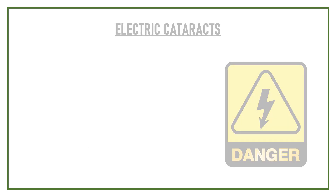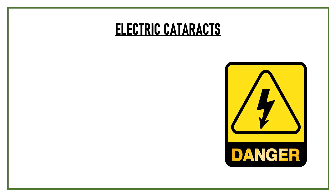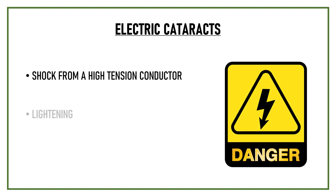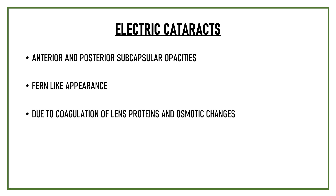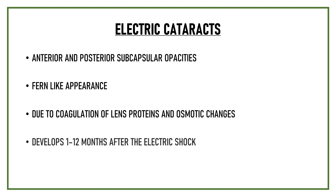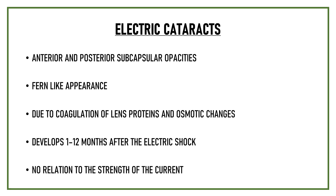Electric cataracts can occur following shock from a high-tension conductor, lightning, or sometimes even electric shock therapy. These are typically anterior and posterior subcapsular opacities with a fern-like appearance, believed to develop due to coagulation of proteins and osmotic changes following damage to the subcapsular epithelium. They usually develop 1 to 12 months after the electric shock.